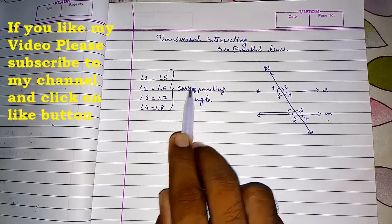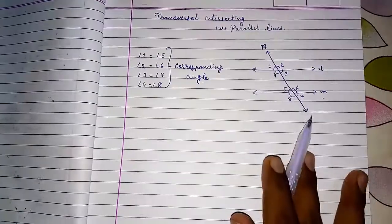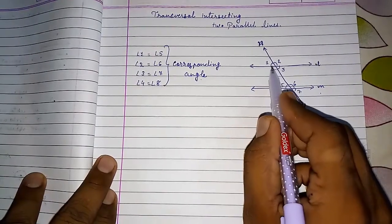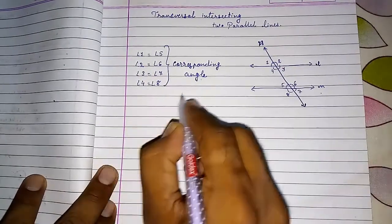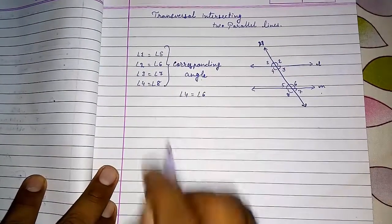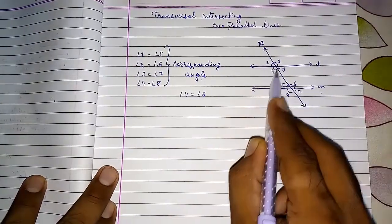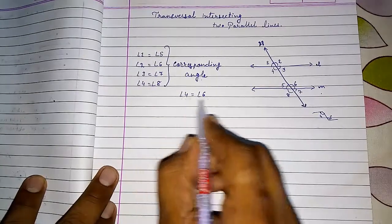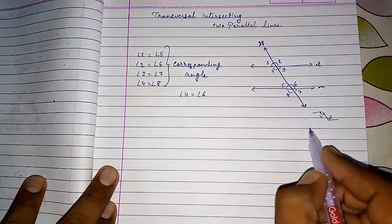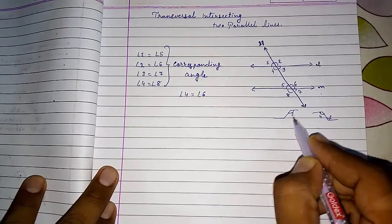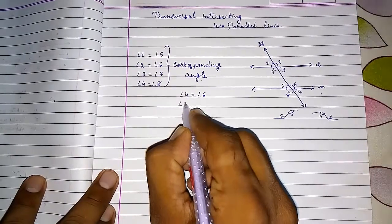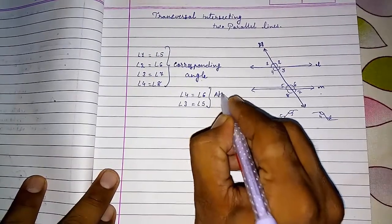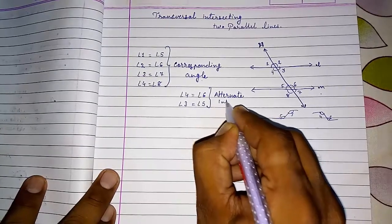Now, you can see a Z shape forming here. On the opposite side we get angles four and six, so angle four equals angle six. A reverse Z is also formed — angle three equals angle five. The reason behind this is alternate interior angles, as these angles lie between the two parallel lines.